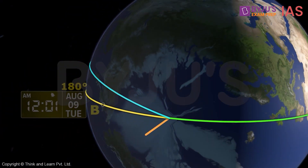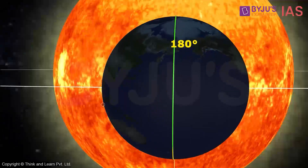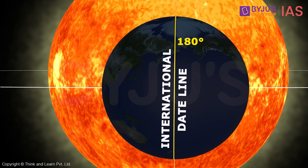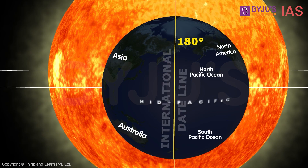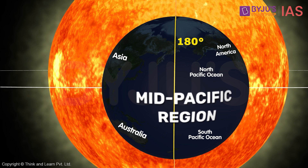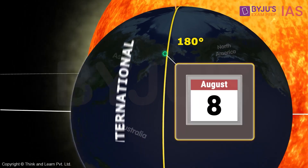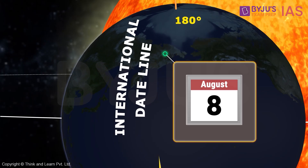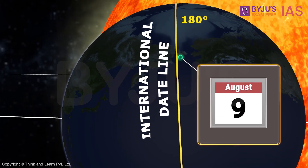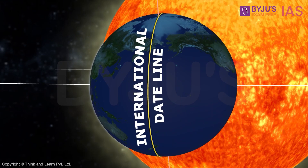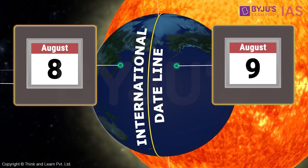All this is happening at the 180 degrees longitude that has a special name called the International Date Line. The International Date Line passes through the mid-Pacific region. Thus, we can say that the International Date Line functions as a line of demarcation separating two consecutive calendar dates.